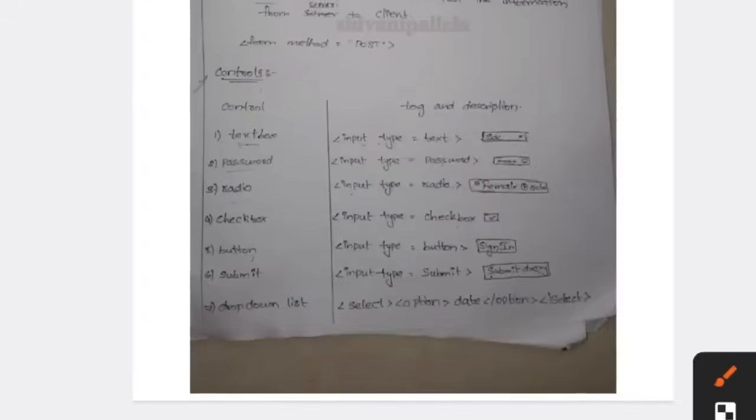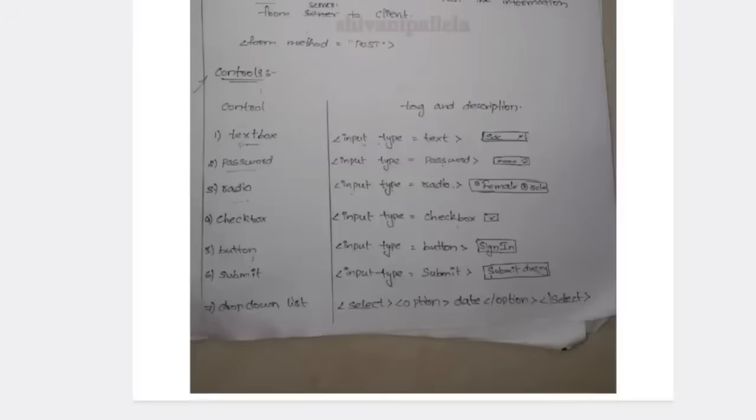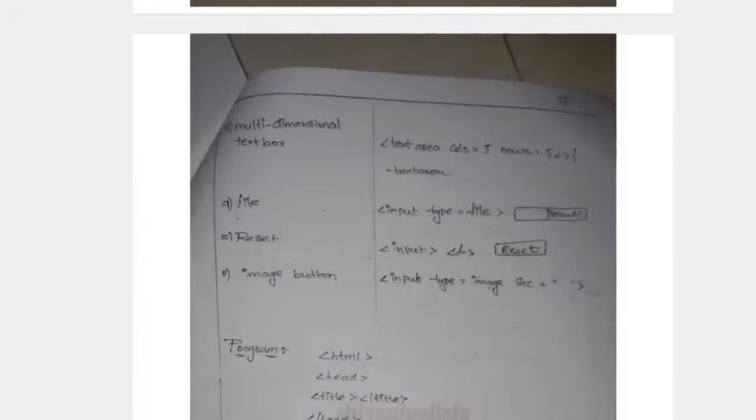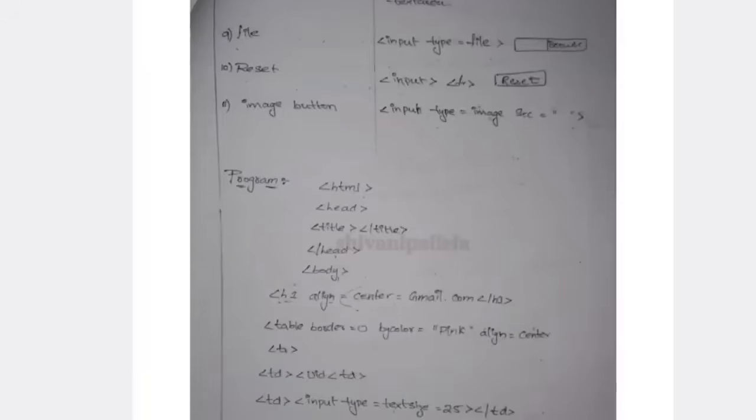Next you are having controls - forms and controls. This is compulsory you need to write it. Here you will have text box - input type is equal to text. Password - input type is equal to password. Radio - input type is equal to radio. Checkbox - input type is equal to checkbox. Button - input type is equal to button. This is easy, you need to remember these names. Next multi-dimensional text box, file, reset, image button. You need to mention all these controls and program you need to write.